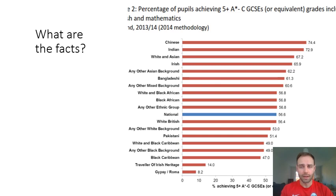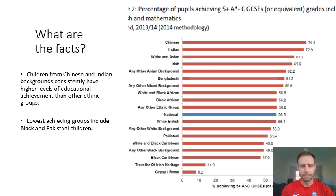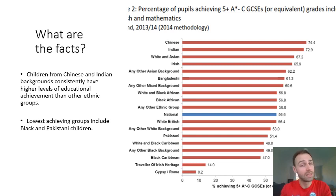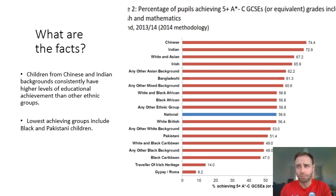The facts are fairly consistent. We can see from the data that children from Chinese and Indian backgrounds consistently perform better than other ethnic groups in the UK. This graph shows the percentage of children achieving five or more A* to C grades in English and Maths in 2013 and 2014. Although this data is about seven years old, it has not changed very much since then. Chinese and Indian children tend to do the best, and at the other end of the table, the lowest achieving groups typically include black and Pakistani children.